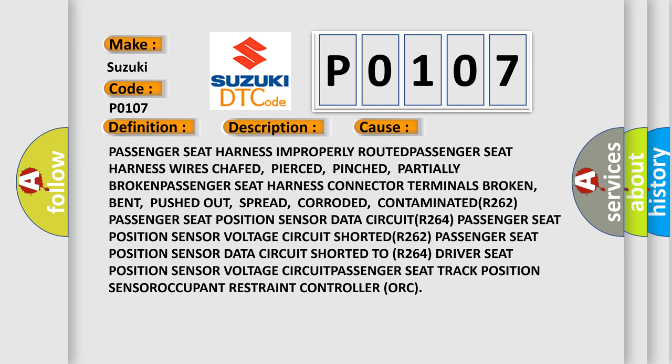Additional causes include corroded or contaminated connector terminals. Related codes include R262 — passenger seat position sensor data circuit; R264 — passenger seat position sensor voltage circuit shorted; R262 — passenger seat position sensor data circuit shorted to R264 driver seat position sensor voltage circuit; and the passenger seat track position sensor Occupant Restraint Controller (ORC).